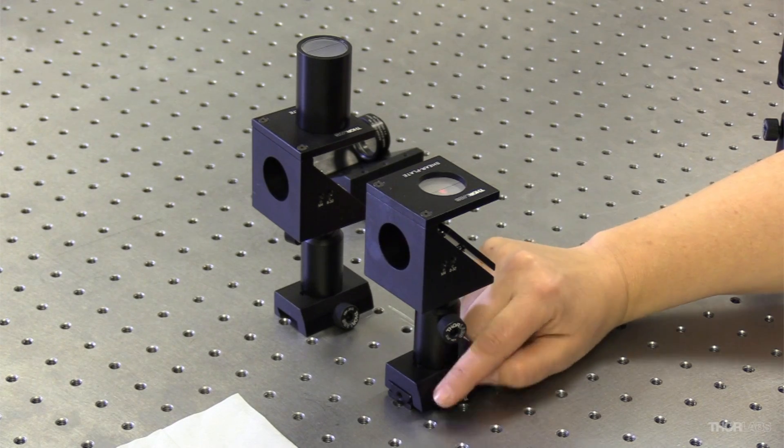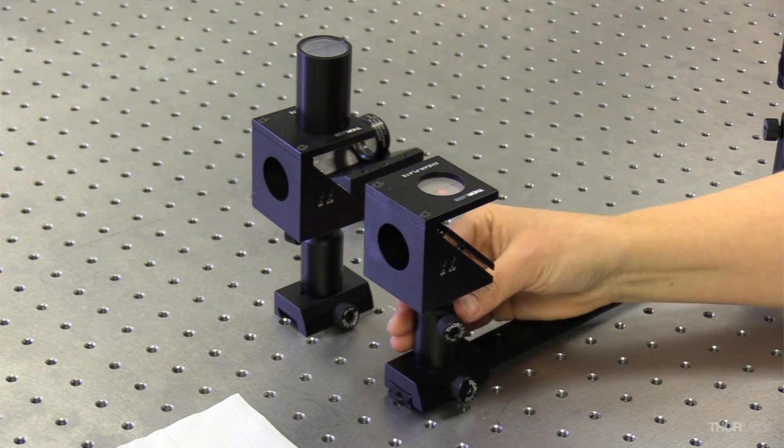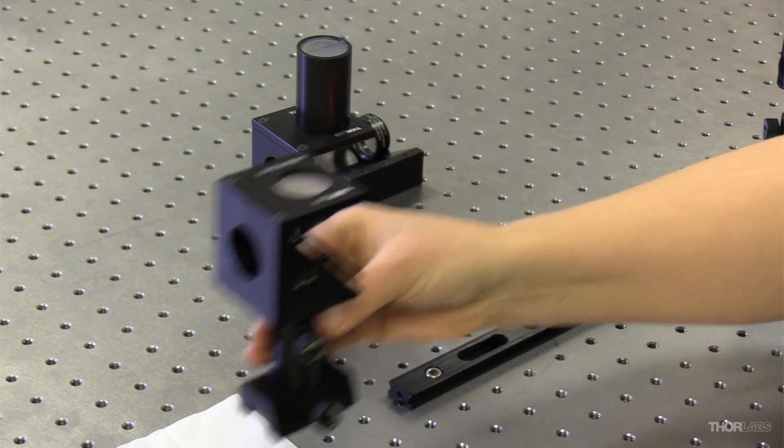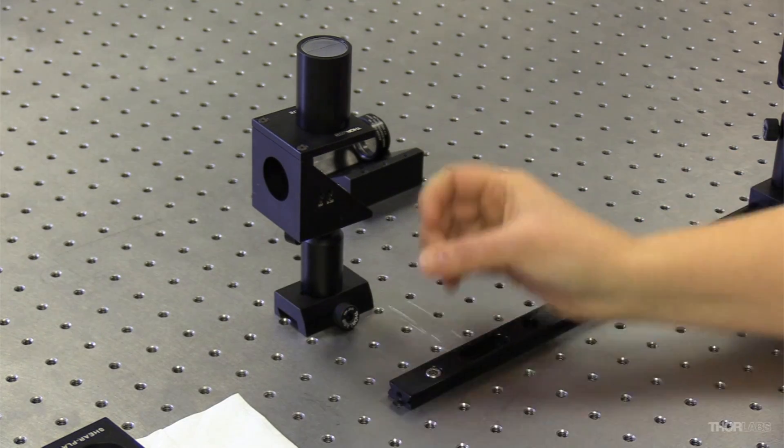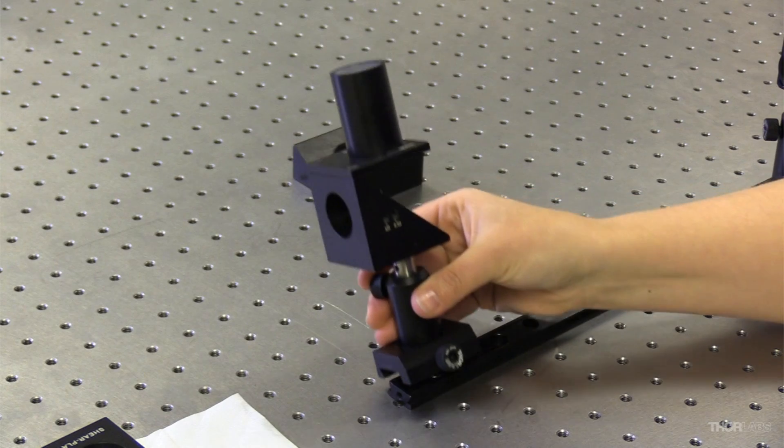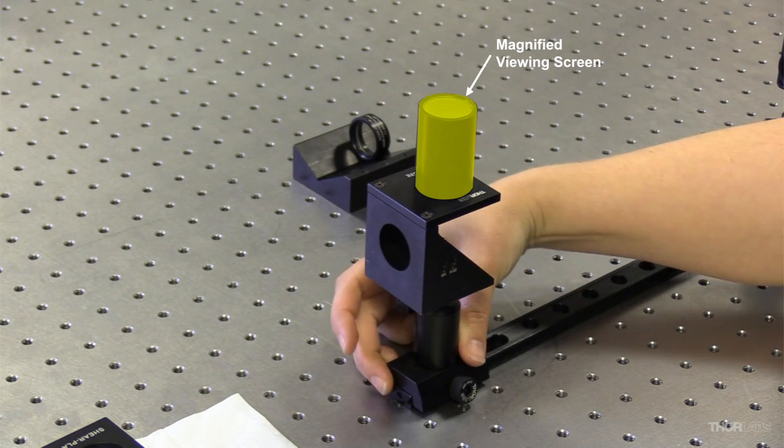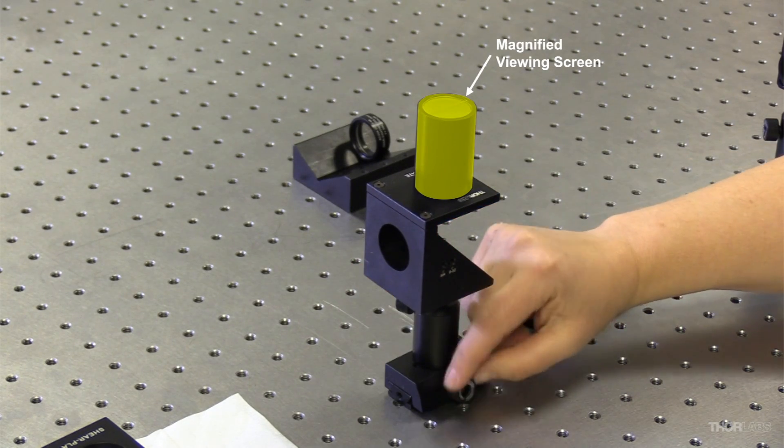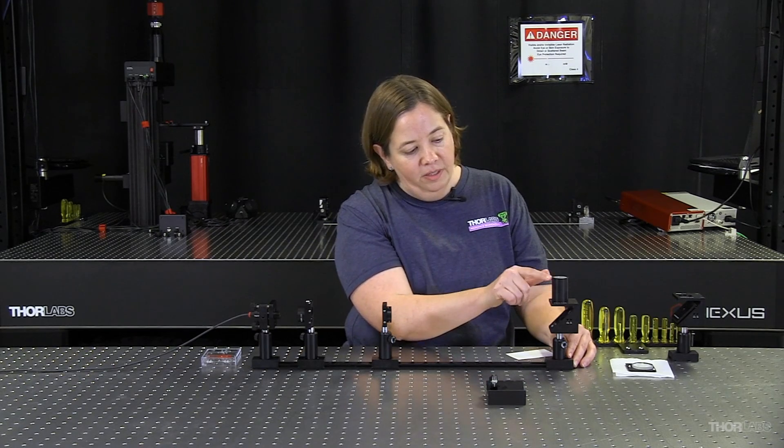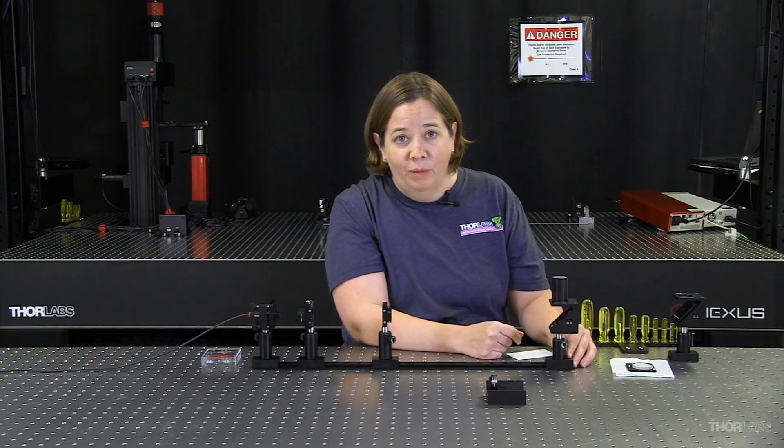So I'm going to remove this shearing interferometer and put this off to the side for a moment and transfer in this other version. This has a magnified viewing screen on the top of it. So there's a lens in here, and then the ground glass is up here at the top. So now I can take that little tiny signal and make it bigger.